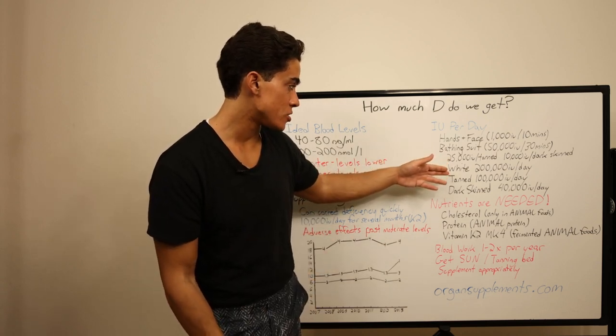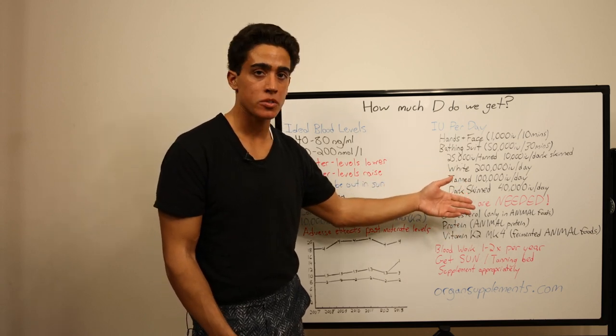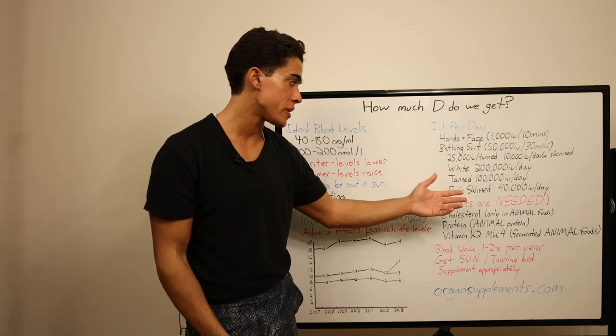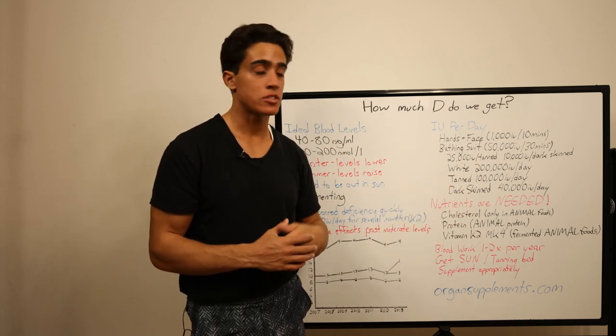And I did some estimations here. So a white person would get 200,000 IU per day, a tanned person 100,000 IU per day, and a dark skinned person 40,000 IU per day. And that's a hypothetical visit to the beach.